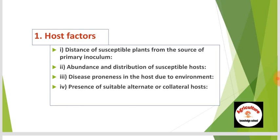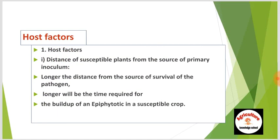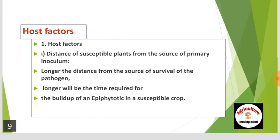Host factors. There are four factors. First is the distance of susceptible plants from the source of primary inoculum. Second is the abundance and distribution of susceptible host. Third is disease proneness in the host due to environment. Fourth is the presence of suitable alternate or collateral host. Regarding the first factor: the longer the distance from the source of survival of the pathogen, the longer will be the time required for the buildup of an epiphytotic in a susceptible crop.